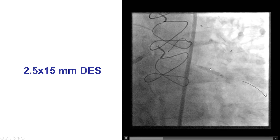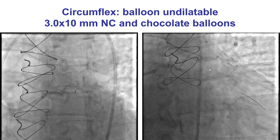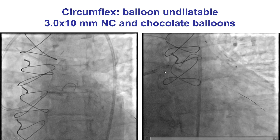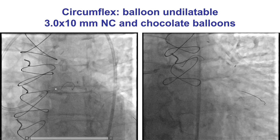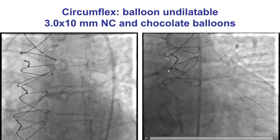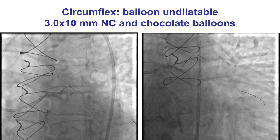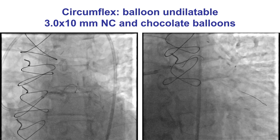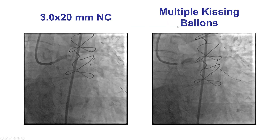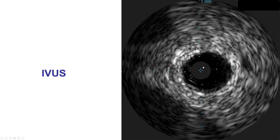We successfully stented the obtuse marginal lesion without any challenges. But then we had a lot of difficulty dilating the circumflex. The lesion was hard to expand despite using multiple high-pressure balloon inflations, including non-compliant as well as the chocolate balloon. We also did multiple kissing balloon inflations in the LAD and the circumflex, but once again, there remained significant disease.